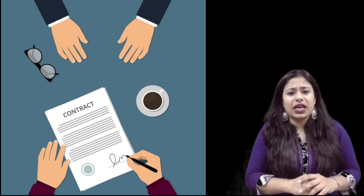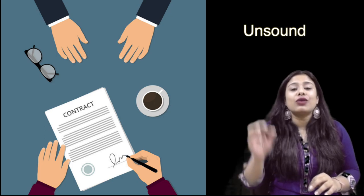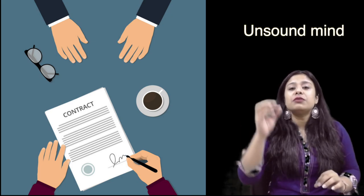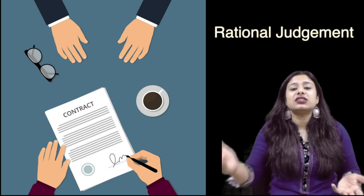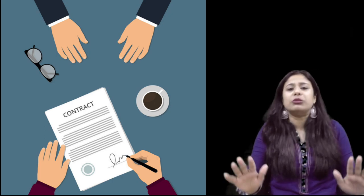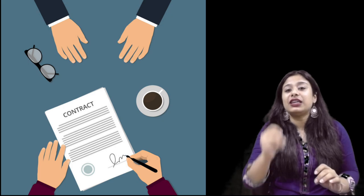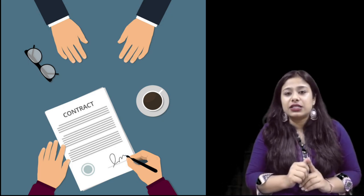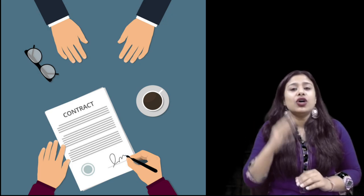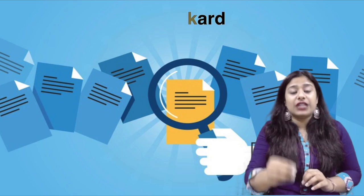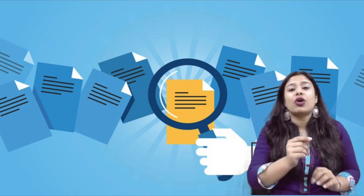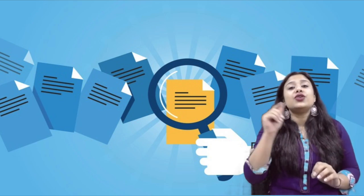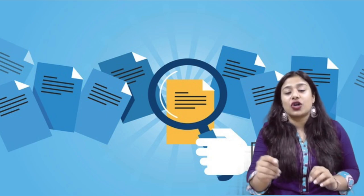The second person incompetent to enter a contract is a person of unsound mind. A sound mind is one capable of taking rational judgments. Anyone incapable of making rational judgments is of unsound mind. A drunkard — a person under the influence of alcohol — is not eligible to enter a contract. A person of sound mind entering a contract with a drunk person will not be able to compel such person to perform on that contract later.